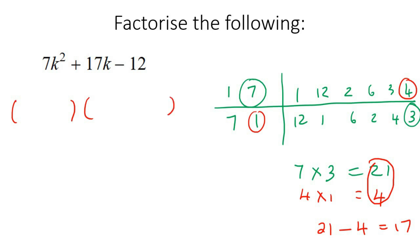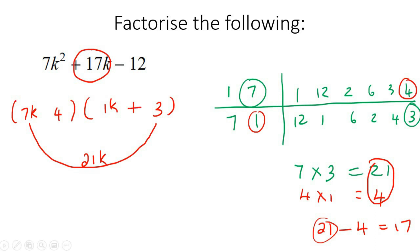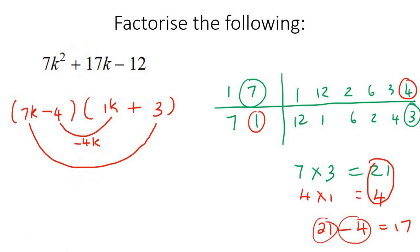Open up our two brackets. Top numbers in the first bracket: 7 and 4. Bottom numbers in the second bracket: 1 and 3. Put k and k so multiplying gives 7k squared. We need to make 17k. Multiplying 7k by 3 gives 21k — we want that positive. Multiplying 4k by 1 gives 4k — we want that negative. So 21k take away 4k gives 17k. We are done.